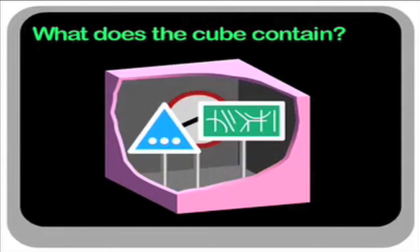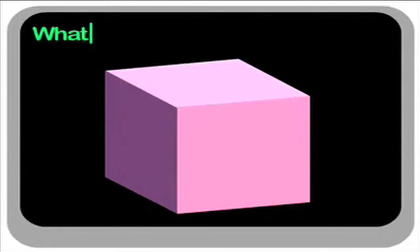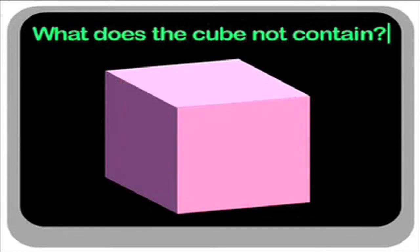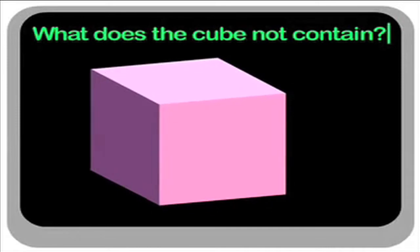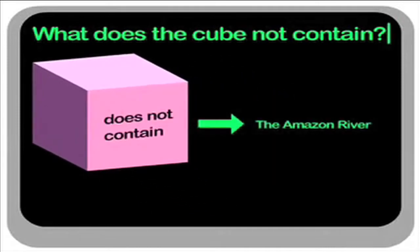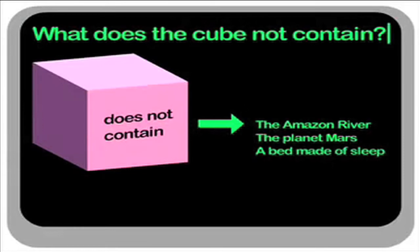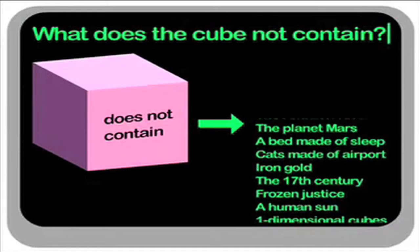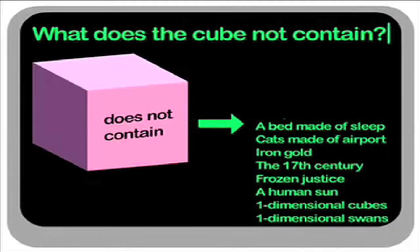You could never give a precise, justifiable answer. But if you were asked what does the cube not contain, you could give many answers. For example, the cube couldn't possibly contain the Amazon River, the planet Mars, or absurd objects such as a bed made of sleep. In fact, there'd be more perfectly valid answers to this second question than you could list in a million lifetimes.